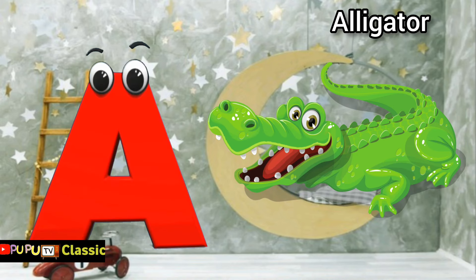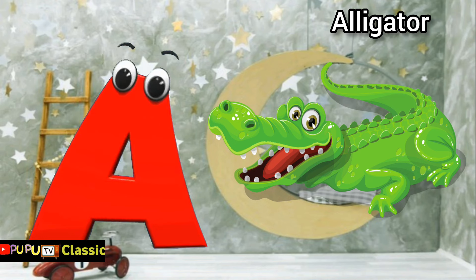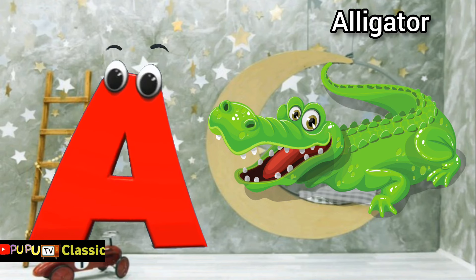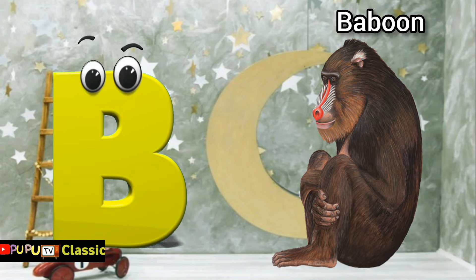A is for alligator, a-a-alligator. B is for baboon, b-b-baboon.